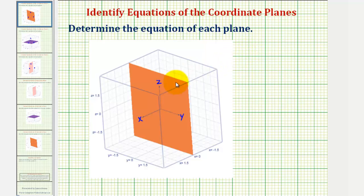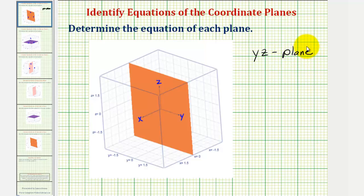Looking at the graph of this first plane, notice how it contains both the y and z axes, and therefore we call this plane the yz-plane. Notice how for any point on this plane, the y and z coordinates can be any real number, but the x coordinate would have to be zero in order to be on this plane. And x equals zero is the equation of the yz-plane.